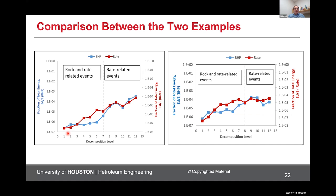Here is a comparison between the two examples. One interesting thing is that for both cases, the deviation between pressure and rate energy occurs mainly in decomposition levels three to seven — before three, there is nothing, and after eight, there is nothing. This tells us that the fracture interaction with natural fractures, and the frequency of that interaction, is probably a function of the fluid we are using and also the rock type. That was basically it for fracture propagation analysis.